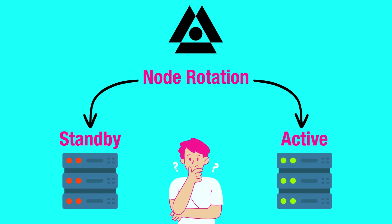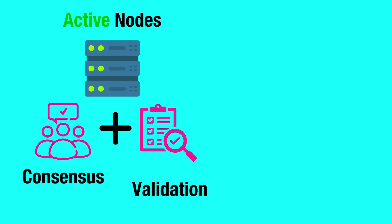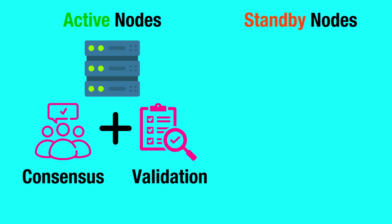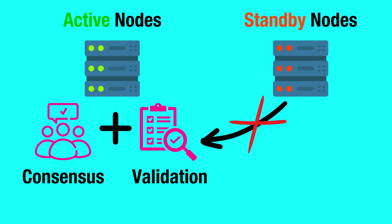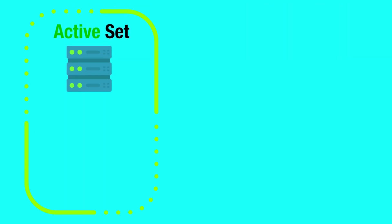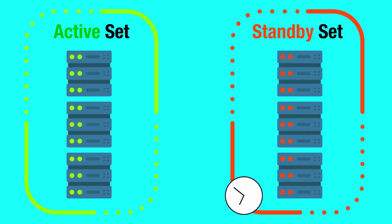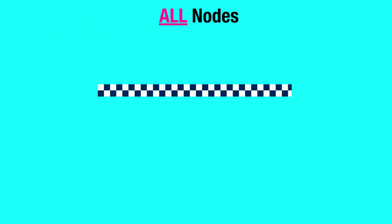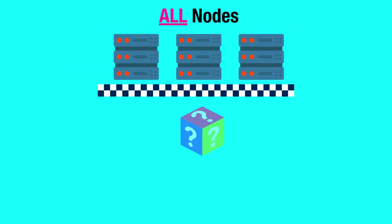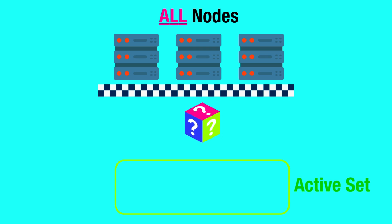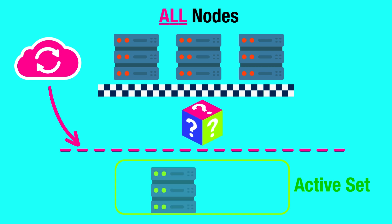So what are standby and active nodes and how do they work? Active nodes participate in consensus and validation on Shardium. Standby nodes do not participate in consensus and validation until randomly selected to become active nodes. There is an active set composed of active nodes and a standby set composed of standby nodes waiting to join the network when called upon. All nodes must start as standby nodes and are randomly selected to join the active set. Prior to entering the active set, they must successfully sync the relevant state data, then they turn into active nodes.